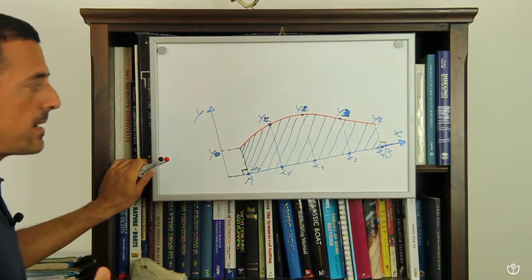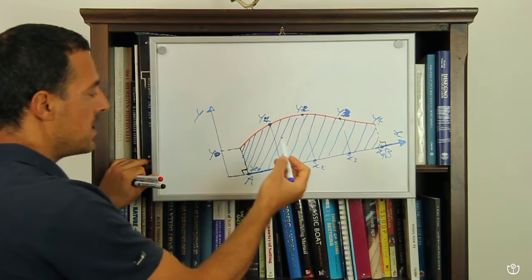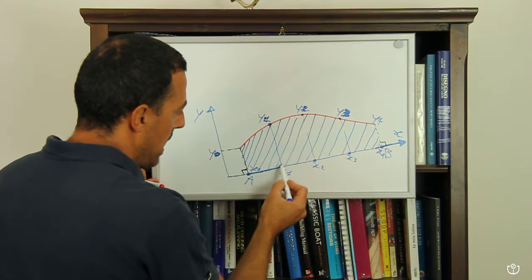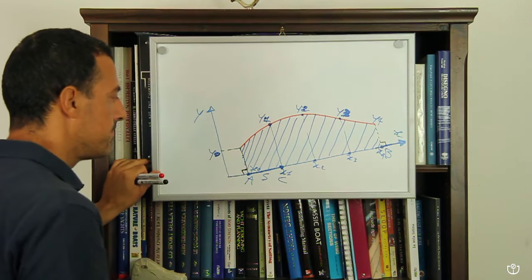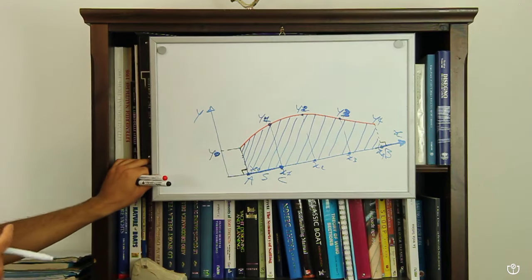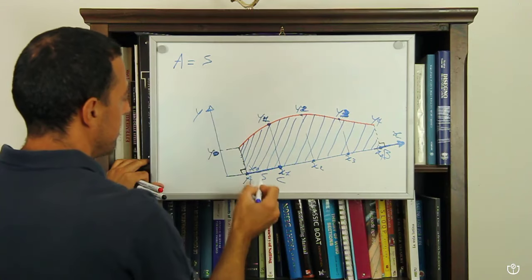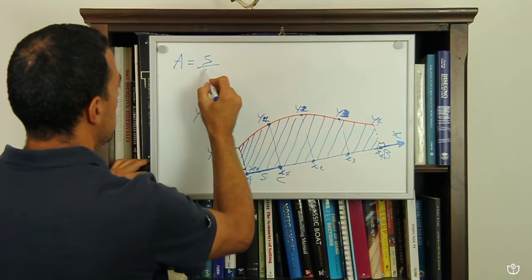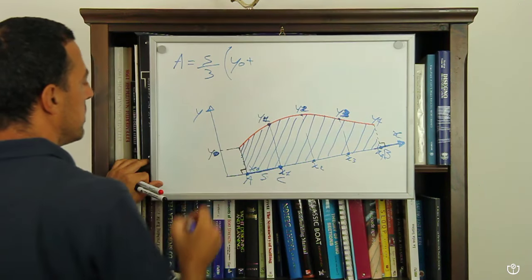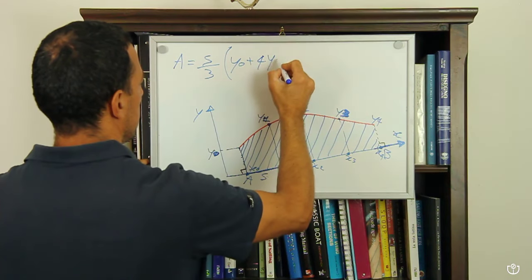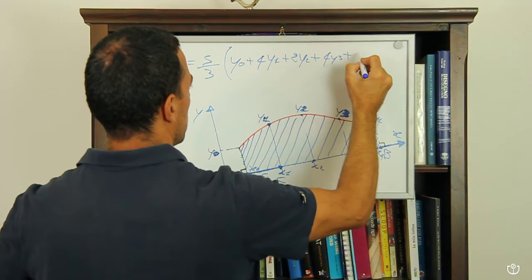Questi sono segmenti che noi possiamo misurare, e possiamo anche misurare il valore di questa partizione. Abbiamo diviso AB in 4 parti uguali; la lunghezza del segmentino da A al punto x₁ la chiamiamo S. Il metodo di Simpson ci dice che l'area sottesa da questa curva è uguale a S/3 per il valore di Y₀ + 4·Y₁ + 2·Y₂ + 4·Y₃ + Y₄.